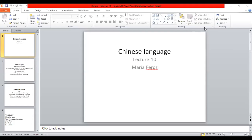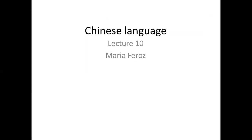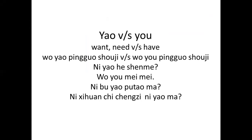Assalamu'alaikum everyone, I hope you all are fine. Today we are going to start lecture number 10. So let's start. Okay, so what's the difference between 要 (yào) and 有 (yǒu)? That's why I wrote it here. 要 means when you want someone or something, and 有 means when you have something.